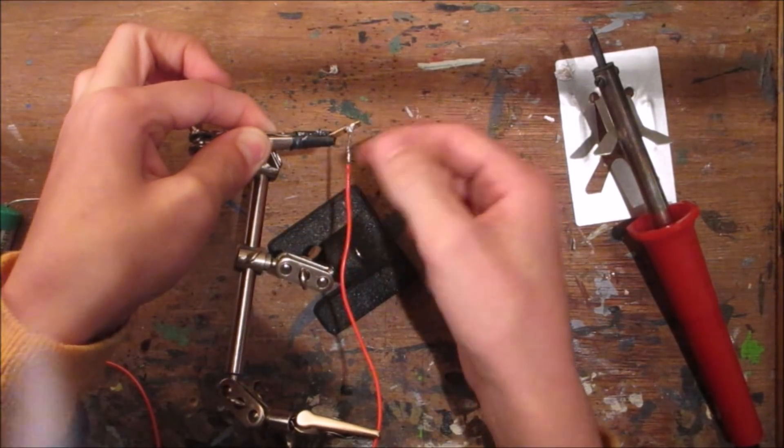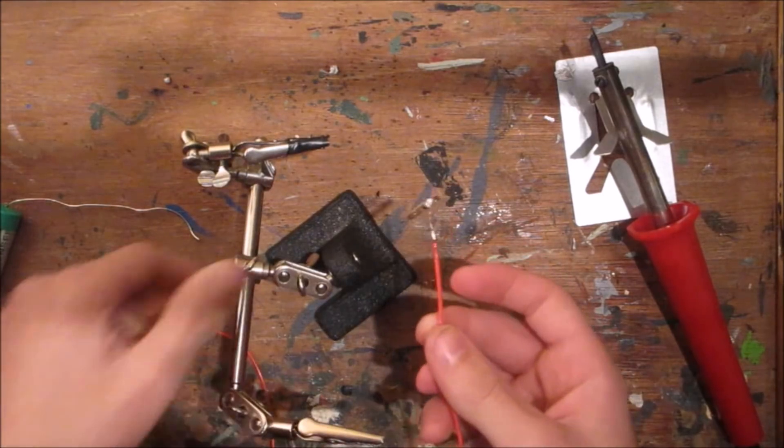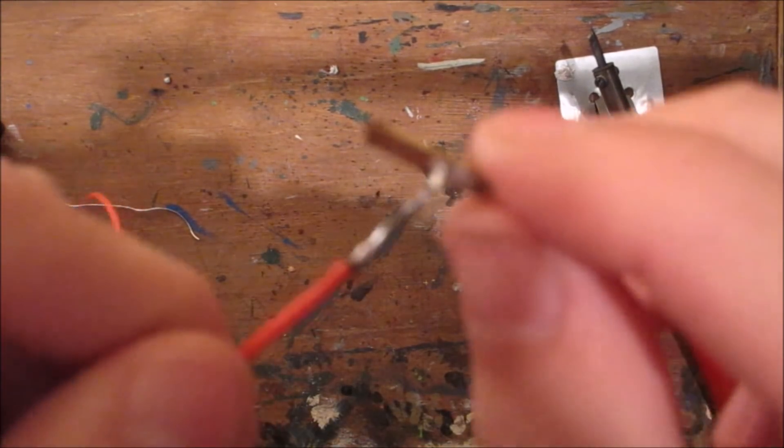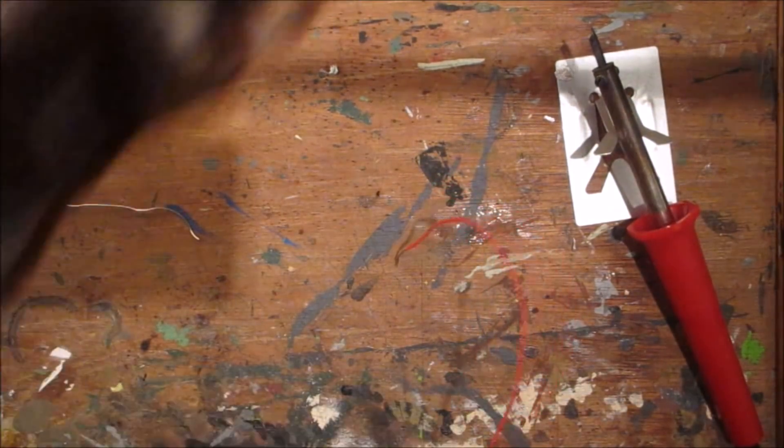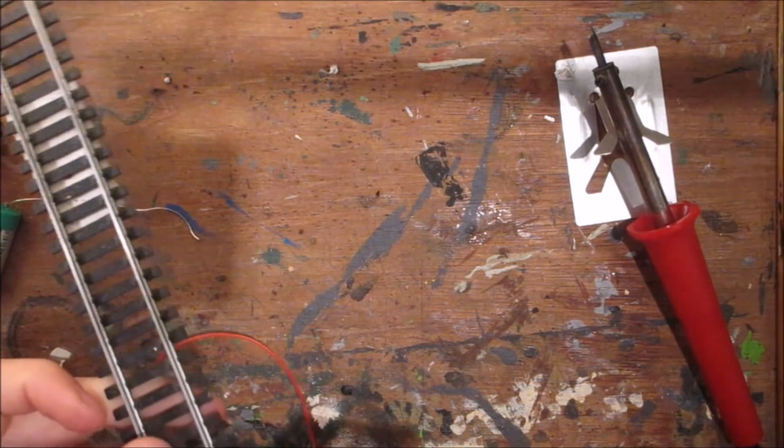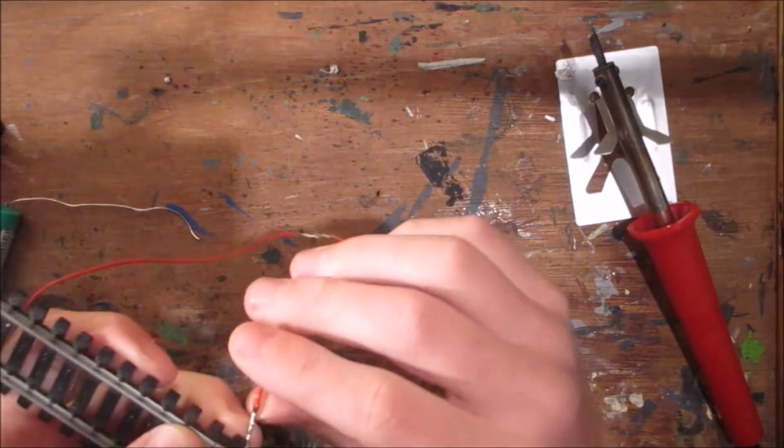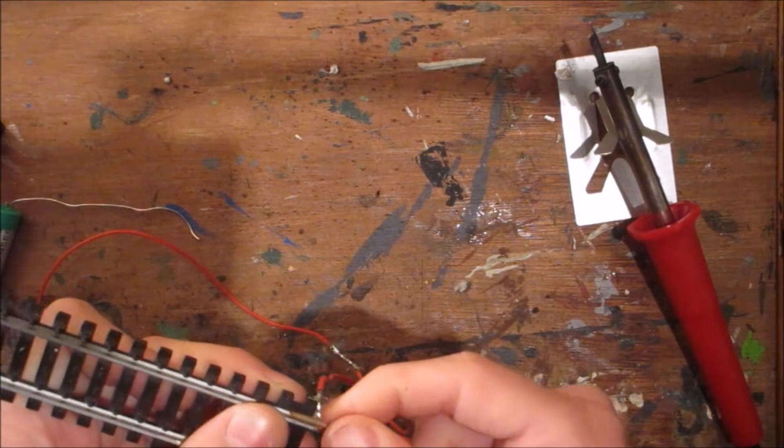So now if I pull them out being careful, because as I said it's very hot, what you can see is that it's nice and neat at the back there. Nice and strong. And by putting them at the side like that, it means when you get a piece of track and you put the fish plate on, then the wire can go just down the side and disappear under the baseboard really discreetly.